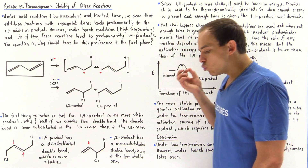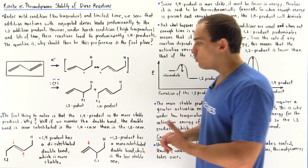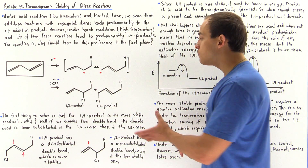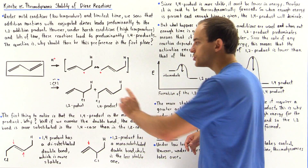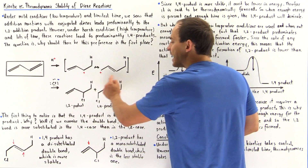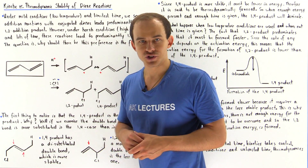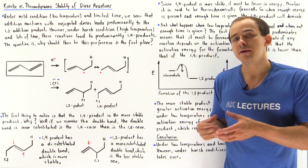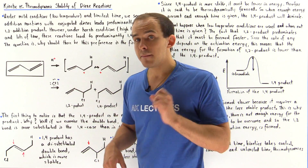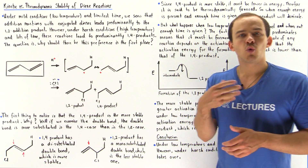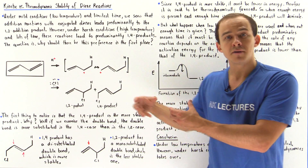When the temperature is low and time is limited, the 1,2 addition product predominates over the 1,4 product. Under low conditions we have about 75% of the 1,2 product and 25% of the 1,4 product. However, under harsher conditions and high temperatures with an unlimited amount of time, the 1,4 product predominates. The question we want to explore is: why is there this preference for one product over the other?